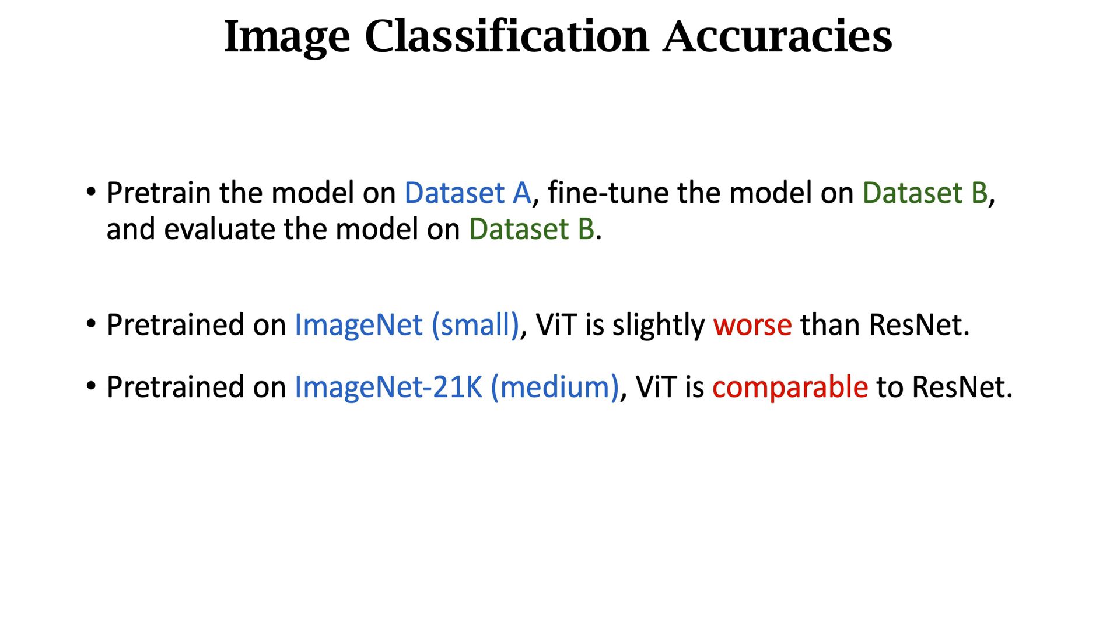Then use the big ImageNet for pre-training. They use several smaller datasets for fine-tuning and evaluation. On all the target datasets, Transformer is comparable to ResNet. The big ImageNet has 14 million images, but it is not big enough for Transformer.